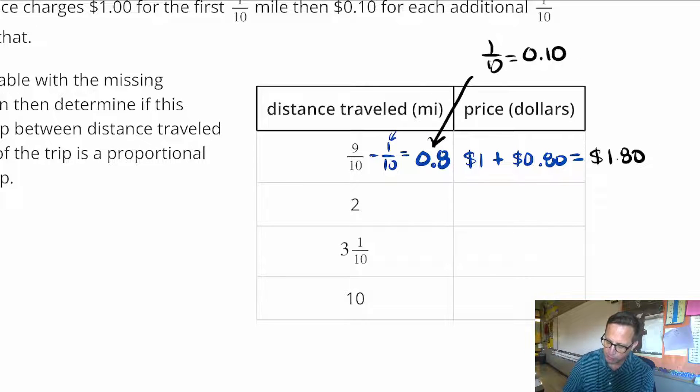I'm going to take away 1 tenth here, and I'm going to write this as 1.9. And so, that first mile, or that first tenth of a mile is $1.00. And the next tenth, so the remaining tenths, are 10 cents. Now, that translates to $1.90, right? That's 19 dimes. So that's going to be plus 1.90, which comes out to $2.90. And I'm going to keep doing this.